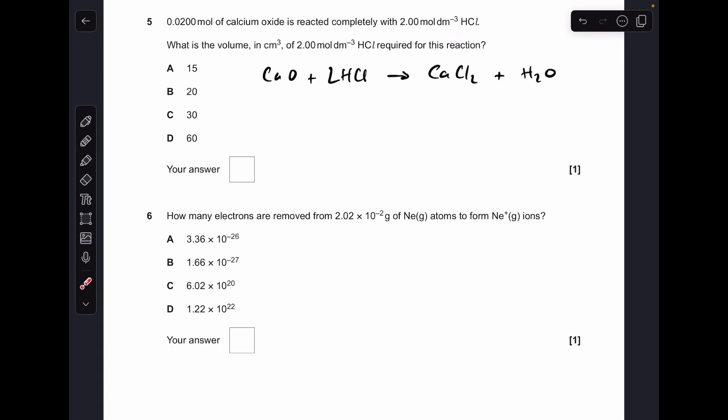Moving on to question five, you're going to need to know the equation or at least the mole ratio between the calcium oxide and the hydrochloric acid. So if you've got 0.02 moles of calcium oxide you're going to need double that for the HCl, so 0.04. Volume equals moles divided by concentration so this volume is 0.02 decimeters cubed which in centimeters cubed is 20, so the answer was B.